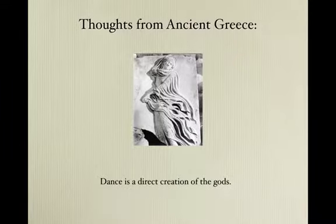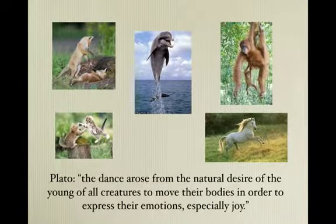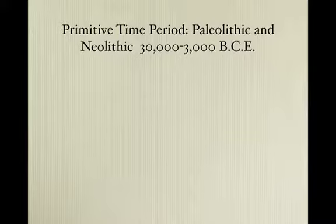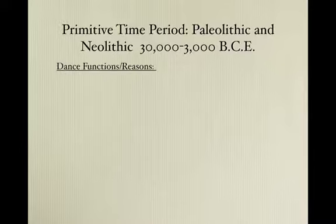From ancient Greece, they thought that dance was a direct creation of the gods, and that the movements of all creatures in the world were dancing. Plato says the dance arose from the natural desire of the young of all creatures to move their bodies in order to express their emotions, especially joy. In the primitive time period — the Paleolithic and Neolithic, about 30,000 to 3,000 BCE — dance had different functions and people practiced dancing for different reasons.